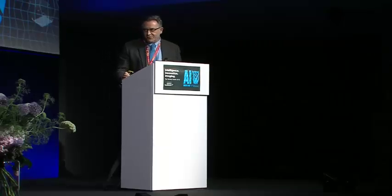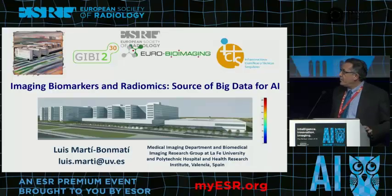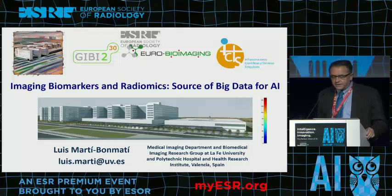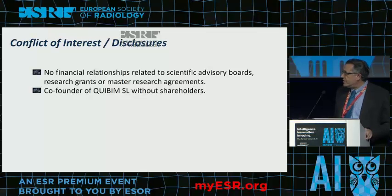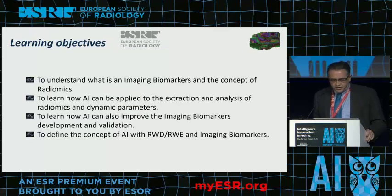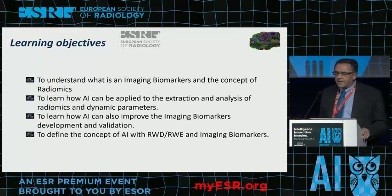I'd like to discuss some items related to artificial intelligence, and in these 20 minutes I will try to give a summary of what we are doing with AI in clinical practice. The topic is related to radiomics, imaging biomarkers, and artificial intelligence. As a conflict of interest, I was co-founder of a company working with AI, but I do not have any shareholding in it. The learning objective is to help those unfamiliar with imaging biomarkers and radiomics understand what they are doing.